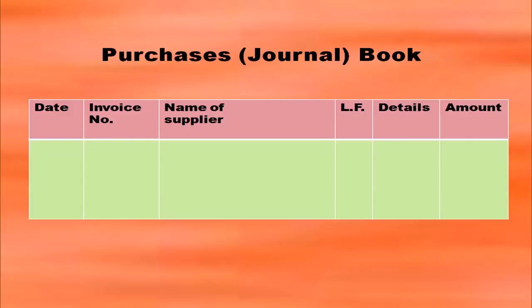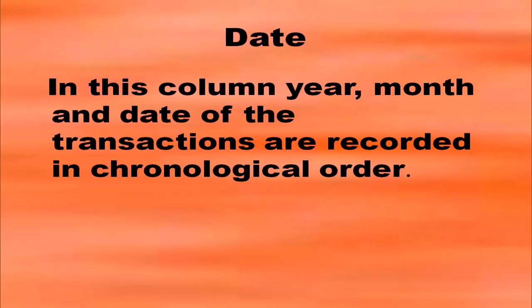You have to write the purchases book according to the format, that is with date, invoice number, name of supplier, ledger folio, details and amount columns. In the date column, year, month and date of the transactions are recorded in chronological order, that is in the order of occurrence.